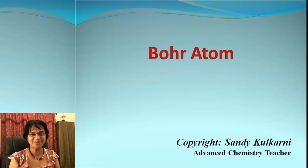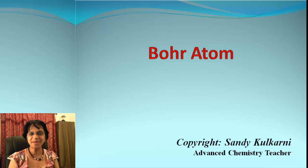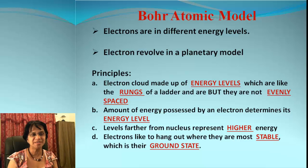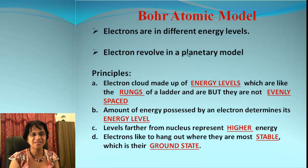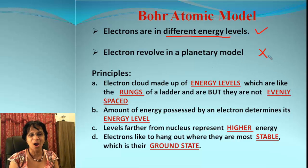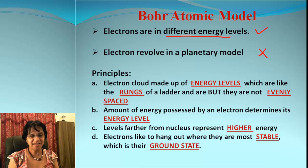Hey kids, Miss Kulkarni here. Let's continue with Bohr's atomic model and how it is applied for obtaining the electromagnetic spectrum. Here are the two main principles of Bohr's model: electrons are in different energy levels — he was perfectly correct on this — and the second principle is electrons revolving in a planetary model, which we know is not true.